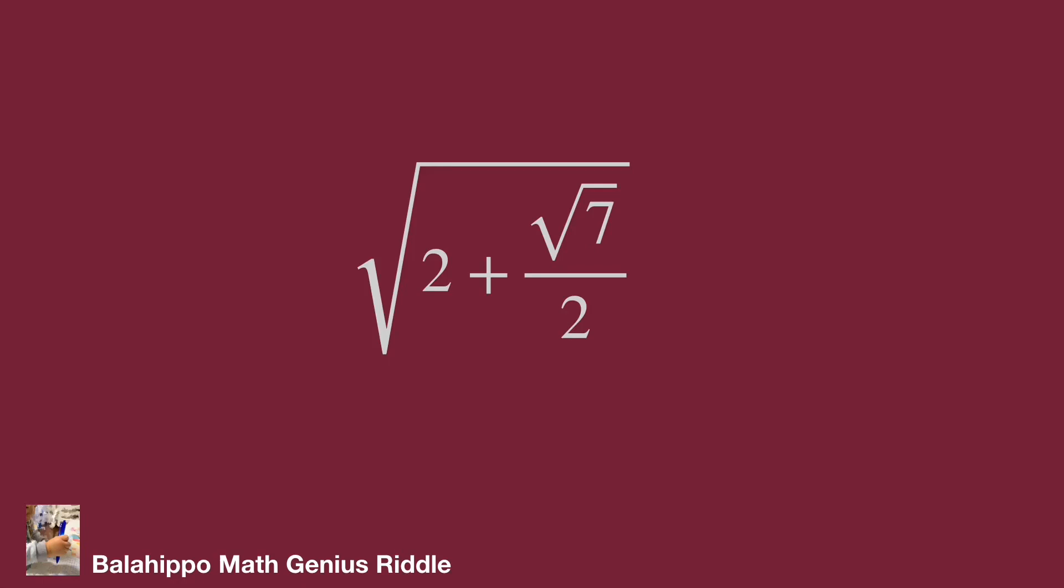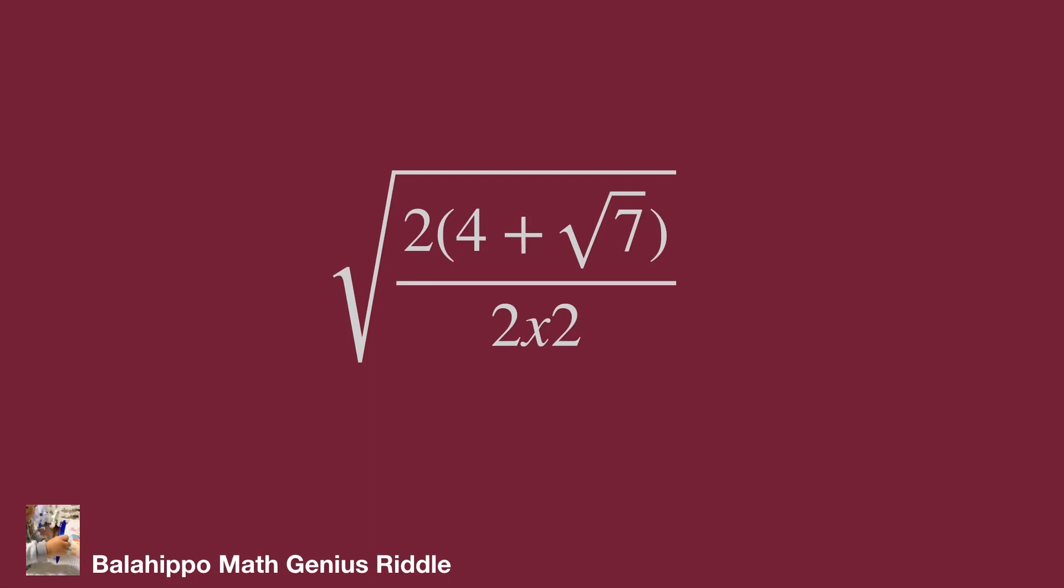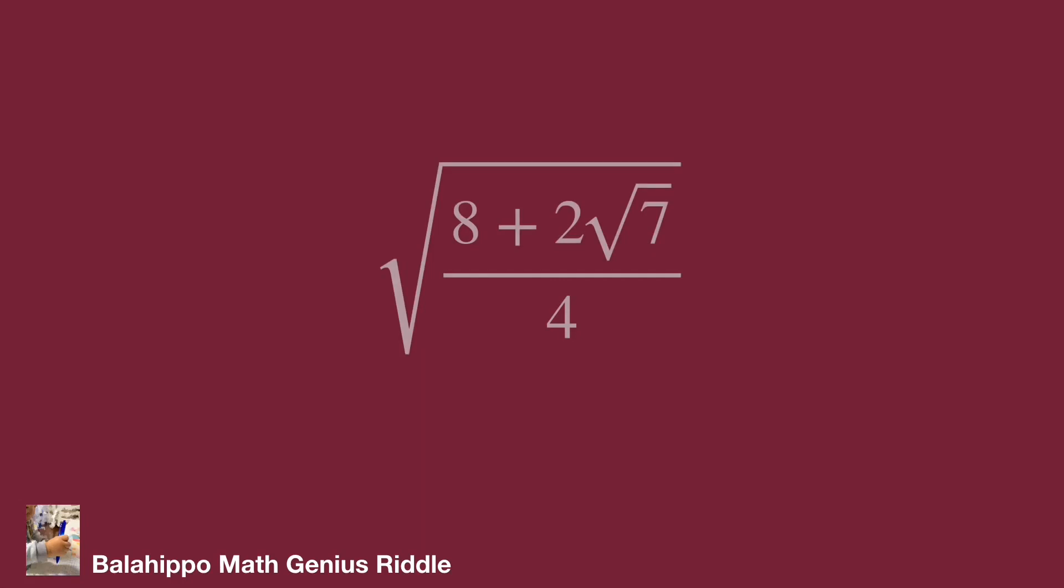At first, deduce the item 2 and the fraction square root of 7 over 2 in the square root. It equals square root of 4 plus square root of 7 over 2. Then multiply 2 to numerator and denominator of this fraction. Develop it as square root of 8 plus 2 times square root of 7 over 4. So we have the item 2 times square root of 7.